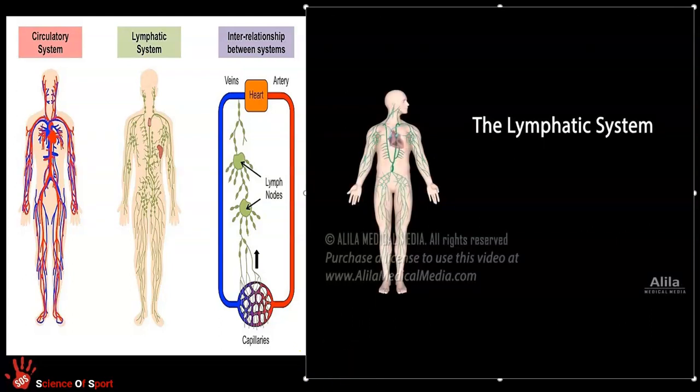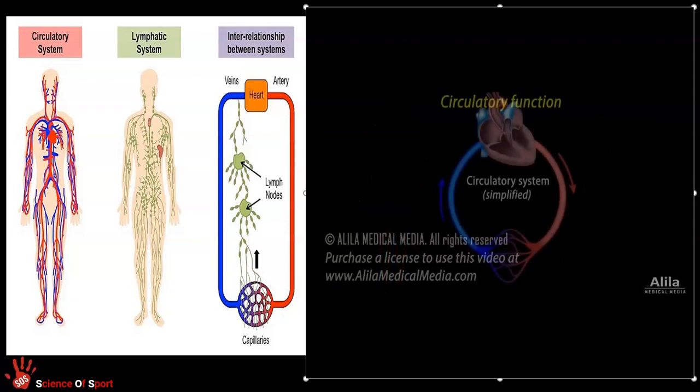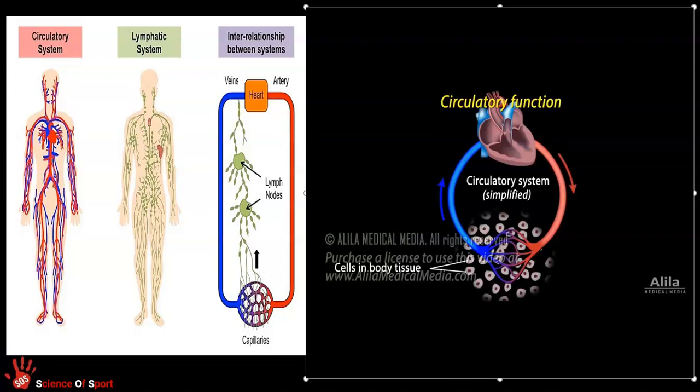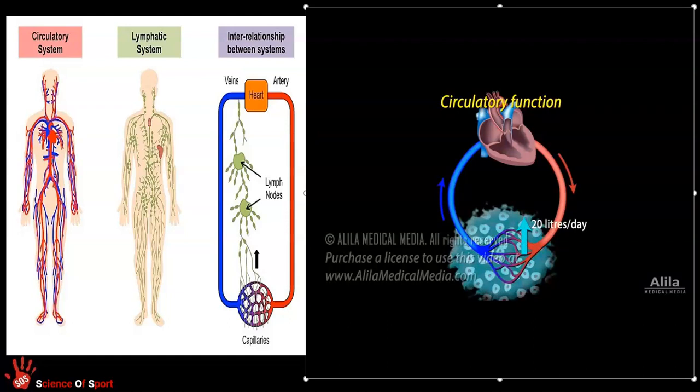In a nutshell, the lymphatic system is a drainage system that removes excess fluid from body tissues and returns it to the bloodstream. It's actually a subsystem of both the circulatory and immune system. The major purpose of the circulatory system is to bring oxygen and nutrients to body tissues and remove wastes. This exchange happens in the smallest blood vessels called the capillaries. Blood plasma containing nutrients moves out of capillaries at the arterial end of capillary beds, while tissue fluid containing wastes reabsorbs back in at the venous end.